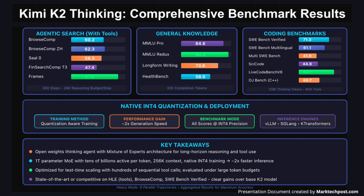On general knowledge benchmarks, it reports 84.6 on MMLU Pro, 94.4 on MMLU Redux, 73.8 on Long Form Writing, and 58.0 on HealthBench. For coding, K2 Thinking achieves 71.3 on SWE Bench Verified with Tools, 61.1 on SWE Bench Multilingual with Tools, 41.9 on Multi-SWE Bench with Tools, 44.8 on SciCode, 83.1 on LiveCodeBench V6, 48.7 on OJ Bench in the C++ setting, and 47.1 on Terminal Bench with Simulated Tools.